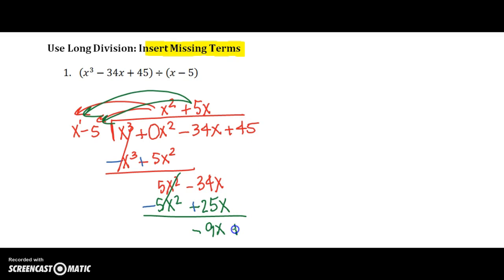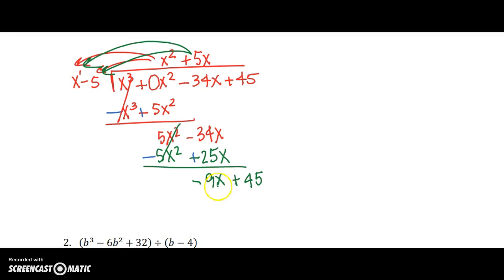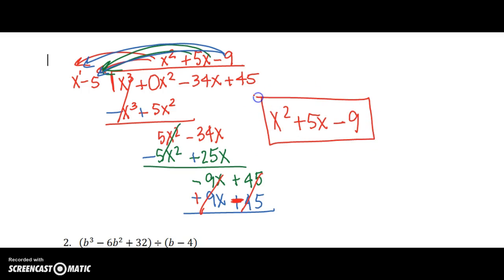And don't forget, you've got 45 to bring down now. And x times what gives us negative 9x? Well, that's going to obviously be negative 9. And I have to multiply negative 9 times both of those terms. So negative 9 times x is negative 9x. And negative 9 times negative 5, negative negative makes positive 45. But don't forget, we have to subtract. And when we subtract, we change both signs. So that's plus negative 45. It's a negative 45. So this cancels, and this cancels, leaving us with no remainder. So our answer is x squared plus 5x minus 9. That's the result of our long division.